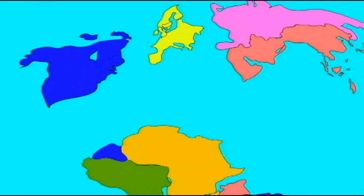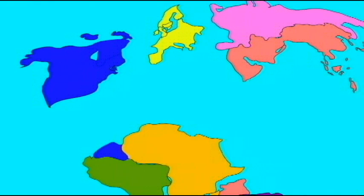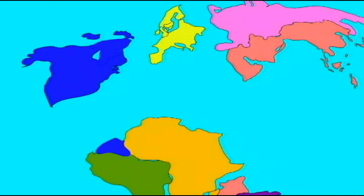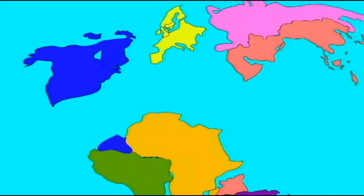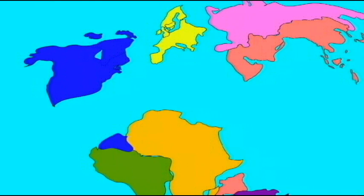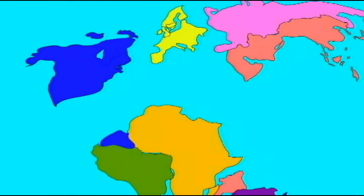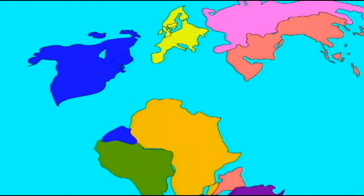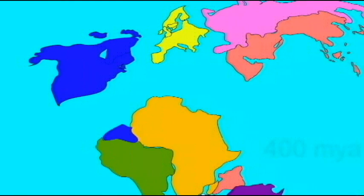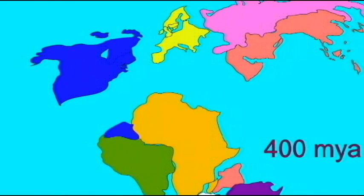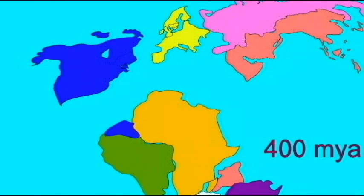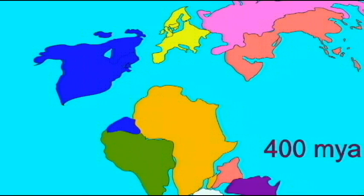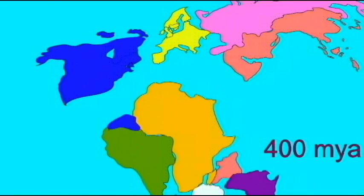Towards the beginning of the Paleozoic Era, the southern continents were fused, and there was a huge supercontinent known as Gondwana. This giant supercontinent was composed of Africa, South America, India, Madagascar, Australia, Antarctica, and part of the Southeast United States and Latin America.